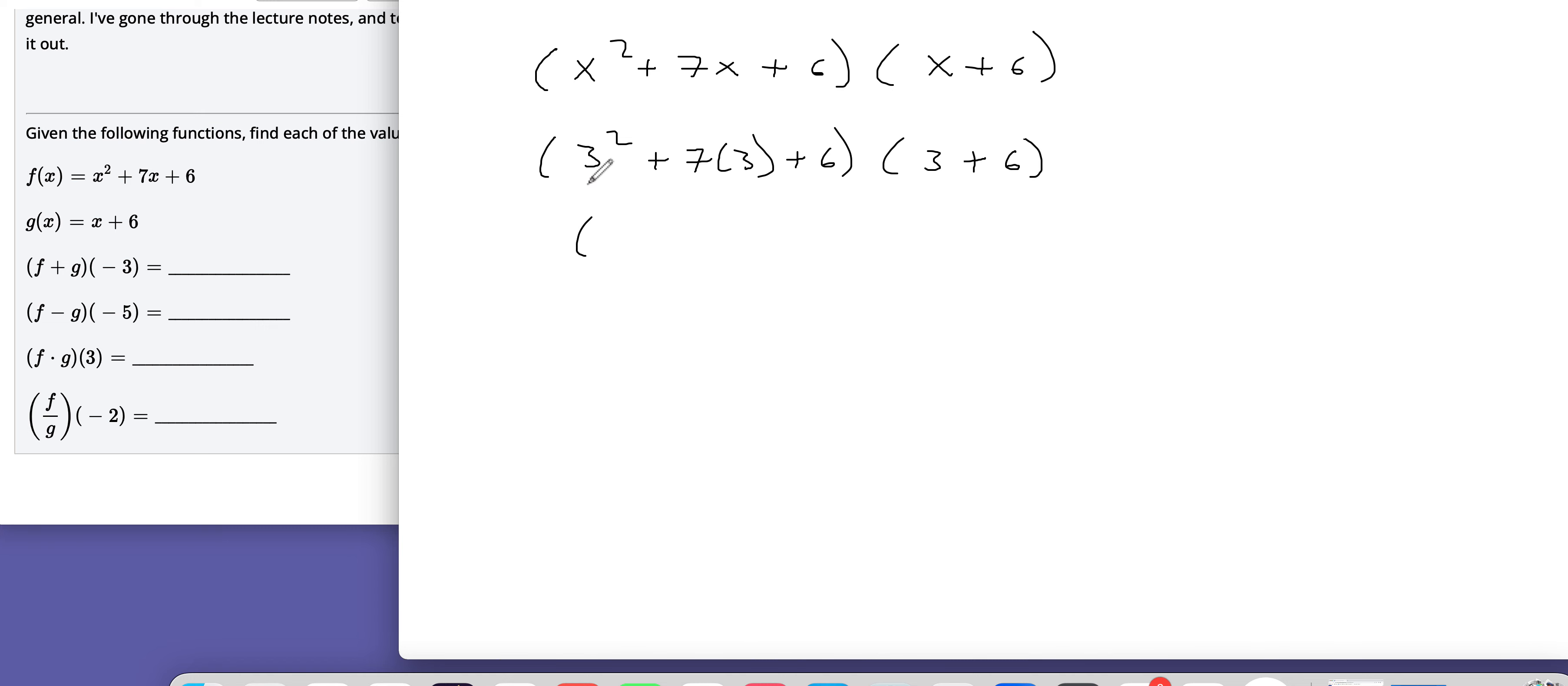So there's F evaluated at 3, and then here is G evaluated at 3. And let's see where these come out. So this is going to be 9 plus 21 plus 6 times 3 plus 6 would be 9, and that is 36 times 9, which I don't know off the top of my head, but let's see. 36 times 9, 324.